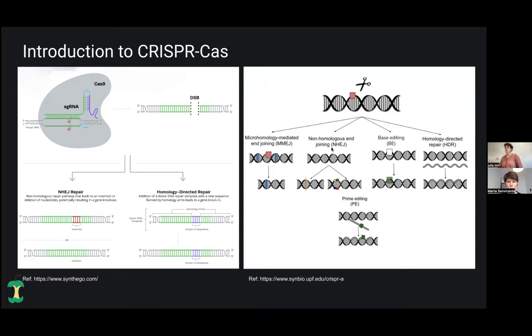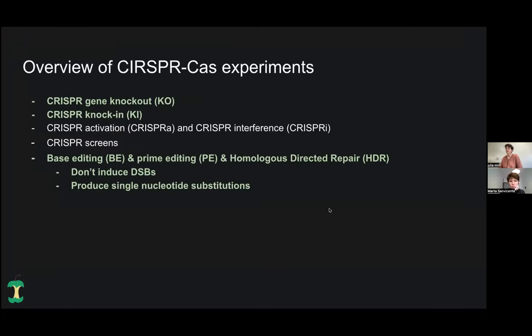Then there's a different way, which is called homology directed repair, which consists of having a template that we can provide. The reparation is made based on that template. So we can introduce new fragments of the DNA and possible gene knock-ins. Apart from these two mechanisms, there's also micro-homology mediated end joining, which is very similar to the non-homologous, but it happens where there are two small regions of homology surrounding the cut, and then this can recombine so we can get a bigger deletion.